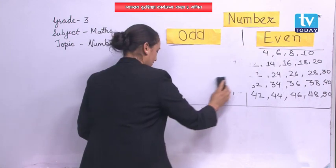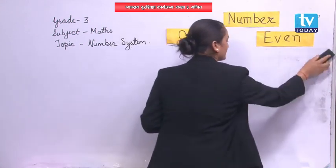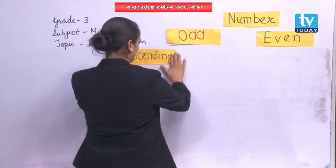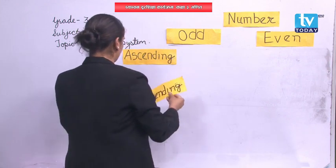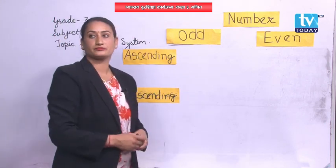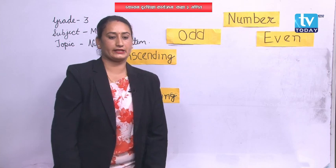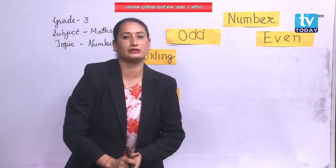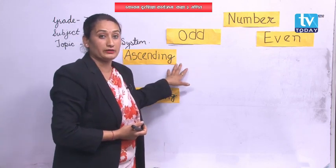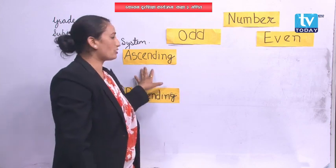After odd and even numbers, we are going to learn ascending and descending order. Do you know what ascending and descending order means? Ascending order means the numbers go in an increasing form. If you are on the ground level and go up to a higher room, you have to move upstairs — one by one, you go up. That means it's an increasing order, from small to big. We call it ascending order.